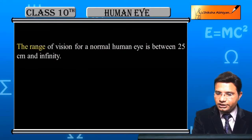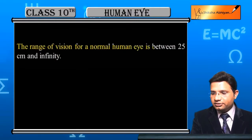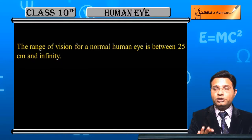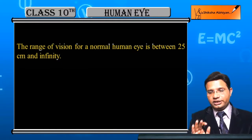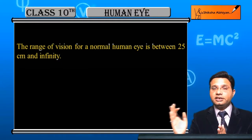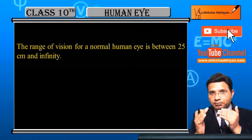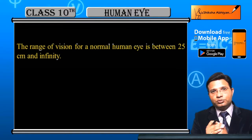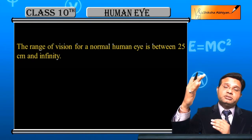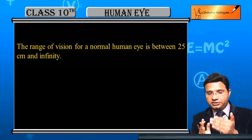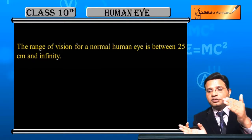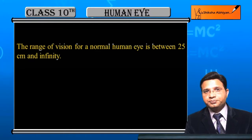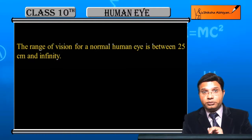The answer is: the range of vision for a normal human eye is between 25 cm and infinity. Normal human eye के लिए range है 25 cm से लेके infinity तक। इसका मतलब है पास की चीजें 25 cm या उससे दूर होंगी तो दिखेंगी, और दूर तक infinity तक देख सकते हैं। 25 cm से पहले नहीं देख सकते — 25 to infinity, यह normal human eye के लिए है।